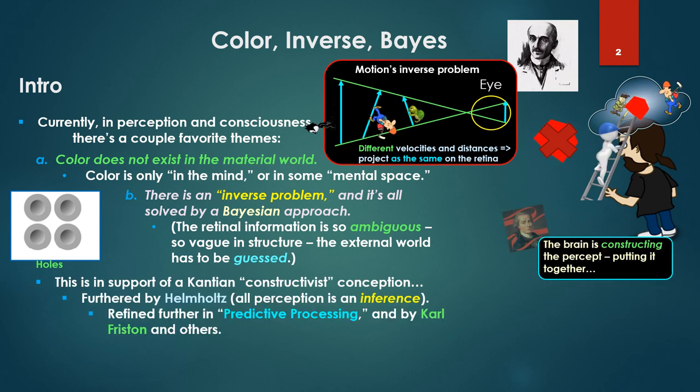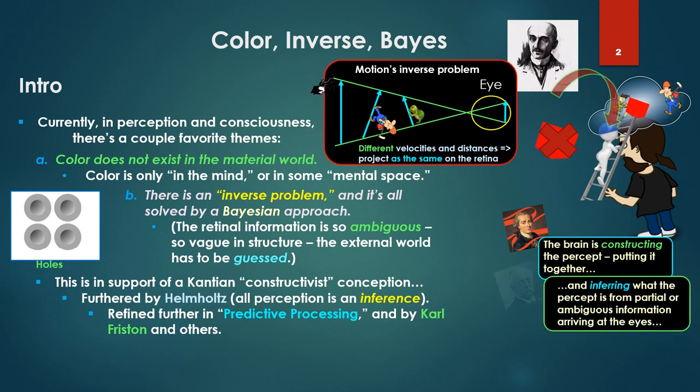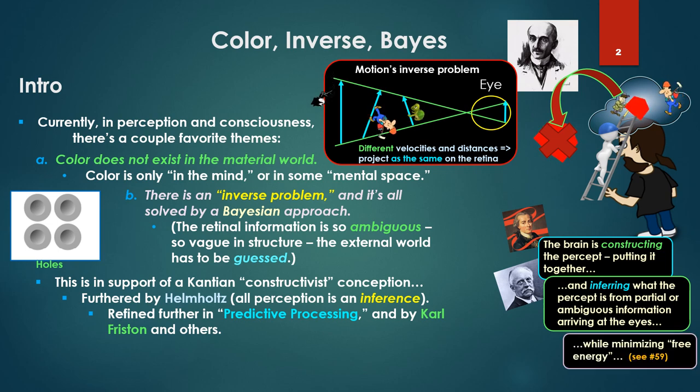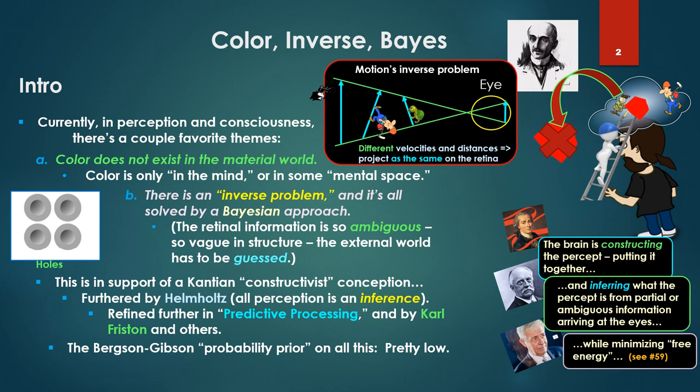So this is in support of a Kantian constructivist conception. That is, the brain is constructing the percept, putting it together. This is furthered by Helmholtz, that all perception is an inference, or inferring what the percept is from partial or ambiguous information, or rubbing at the eyes, and we find further in predictive processing, that framework, for example by Carl Fristin and others.